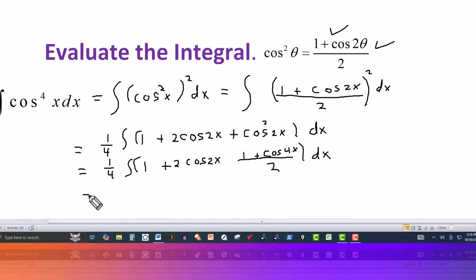Okay then I'm going to simplify this. This will be still the one fourth out here. We haven't integrated yet. We're just going through the algebra part here. So on this part right here we have one plus cosine of four x over two. So let's just divide through by the two. So this will be a constant. This will be one half.